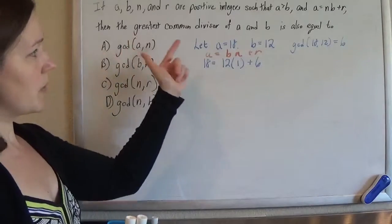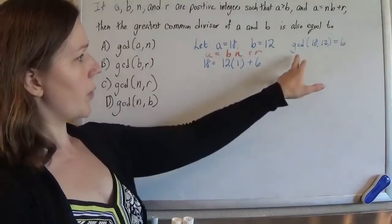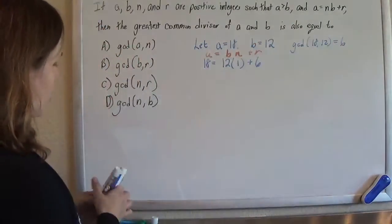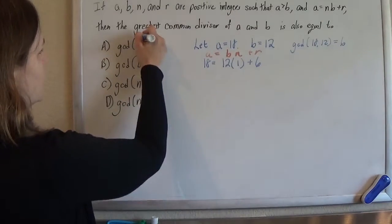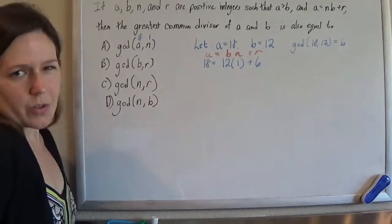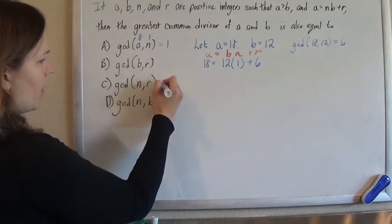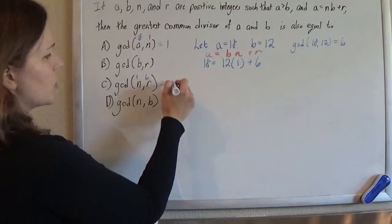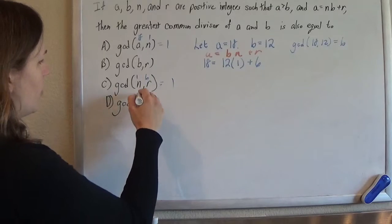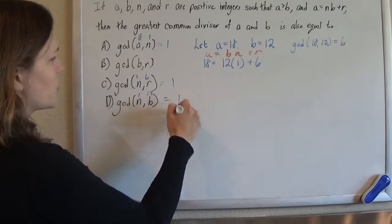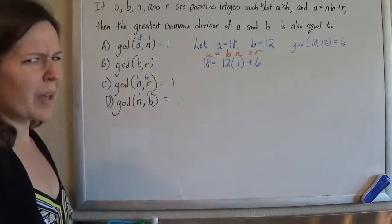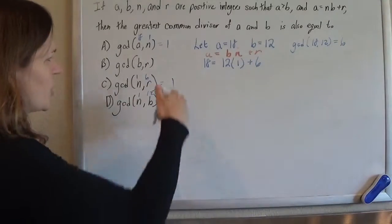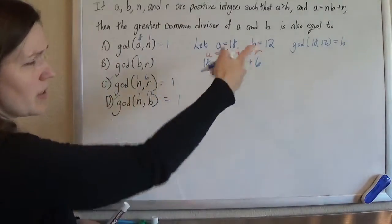Anyway, so now they're saying that the greatest common divisor of a and b is equal to one of these. So the greatest common divisor of 18 and 12 is 6. And so here, the greatest common divisor of 18, and in this case the n was 1, right? So the greatest common divisor of 18 and 1 is 1. The greatest common divisor of 1 and the remainder happen to be 6 is 1. And the greatest common divisor of 1 and 12 is 1. So that n doesn't matter at all. The n is just how many times b goes into 18. It doesn't have to do anything special. So all of these can be tossed out just by this one example.